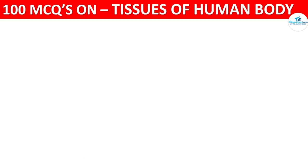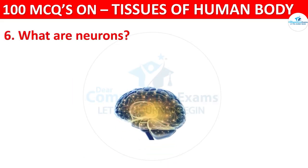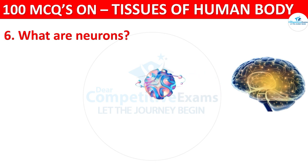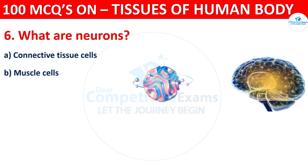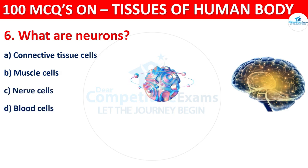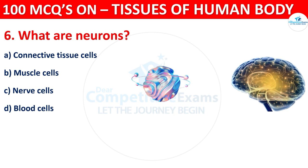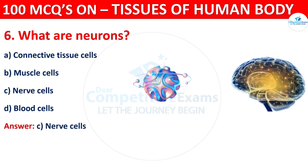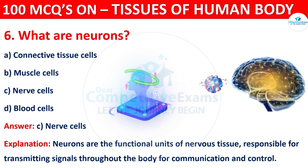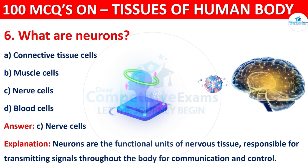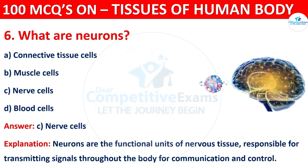Question number six: what are neurons? Options are connective tissue cells, muscle cells, nerve cells, or blood cells. The correct answer is C, that is nerve cells. Neurons are the functional units of nervous tissue, responsible for transmitting signals throughout the body for communication and control.